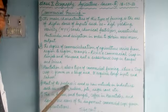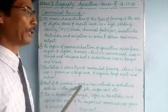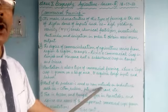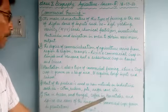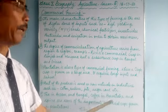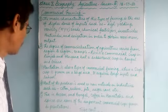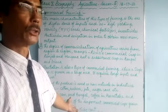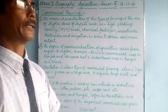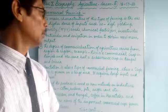Most of the produce from plantations is used as raw materials in industries. Commercial plantation crops such as cotton, jute, rubber, sugarcane, and water rubber are purchased by industrialists as raw materials for agro-based industries. Tea in Assam and Bengal, coffee in Karnataka, and spices are some important commercial crops grown in plantations. These require huge inputs and are grown mainly for industrial purposes as raw materials.